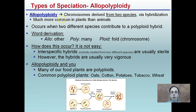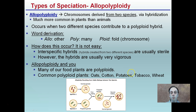The other type is allopolyploidy, where chromosomes are derived from two species via hybridization. This is much more common in plants than animals, and occurs when two different species contribute to the polyploid hybrid. Interspecific hybrids — hybrids created from two different species — are usually sterile, but typically very vigorous. Common polyploids include oats, cotton, potatoes, tobacco, and wheat crops, which fall into this category, producing increased yields. Because they're sterile, these individuals may produce reduced or no seeds, which can be advantageous for the consumer. The farmer gets larger and more consistent crops, and the offspring being produced might be more favorable to buyers. Here are just some examples of biological speciation.